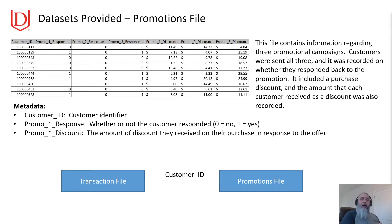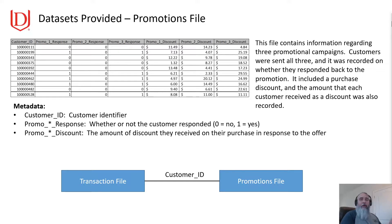The two files we're going to provide go along with the book: the promotions file and the transaction file. The promotions file contains information regarding three promotional campaigns. Customers were sent all three and it was recorded whether or not they responded to that promotion. It includes a purchase discount, and the amount each customer received as a discount was also recorded. The three key fields to look at: customer ID is your record identifier, promo response is whether or not they responded — zero being no, one being yes — and the promotion discount fields are the amount of discount they received in their purchase response to the offer.